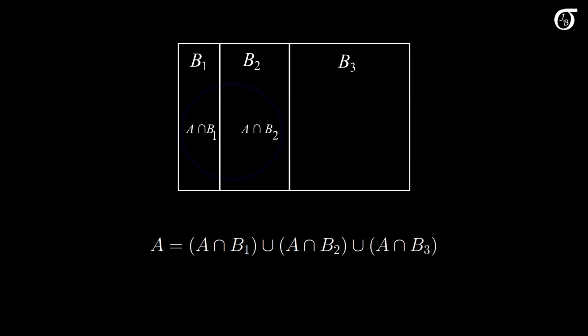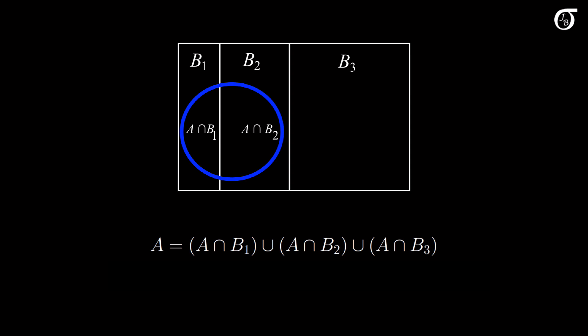If A looked something like this, for example, then A is made up of the intersection of A and B1, and A and B2, and the intersection of A and B3 is the empty set. Any way you slice it, A is made up of these intersections, since the B's span the entire sample space.